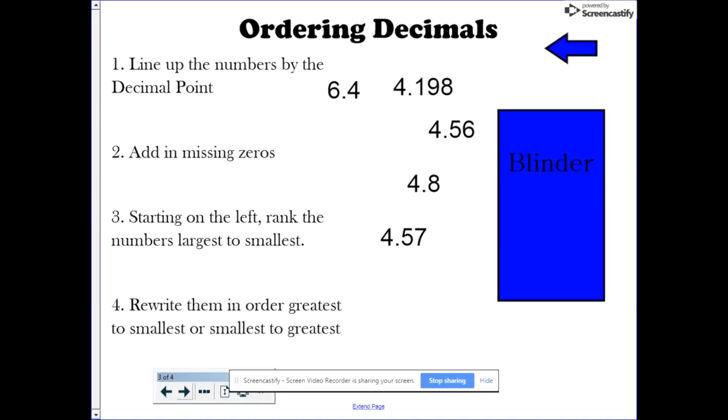Ordering decimals. The process of ordering decimals actually starts out the same way that comparing decimals does. First, you line up the decimal points.